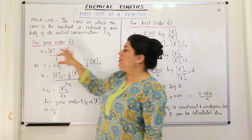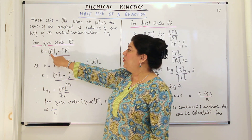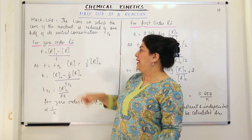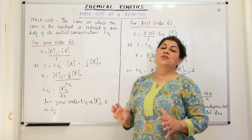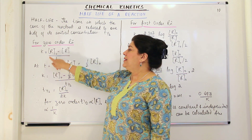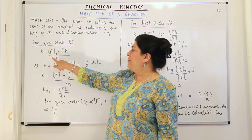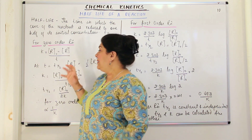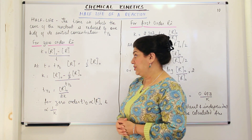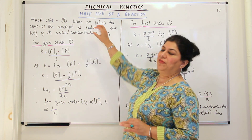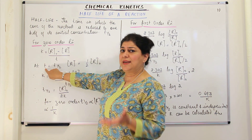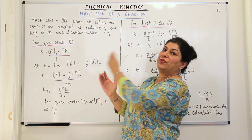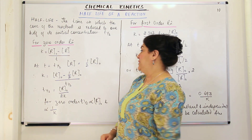For a zero-order reaction, the rate constant K is written as R0 minus R divided by T, where R0 is the initial concentration of the reactant and R is its concentration at any time T. Now if we apply the half-life condition: at time T equal to T½, how much time is required to reduce the concentration of the reactant to half of its amount?